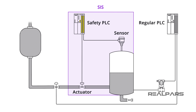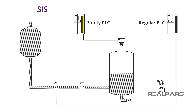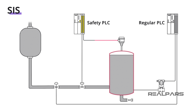The SIS can also be referred to as the Safety Shutdown System. Stated simply, the SIS monitors the equipment or process, and if an unacceptable condition, risk, or unsafe condition occurs, it reacts by the shutdown of the equipment or process.